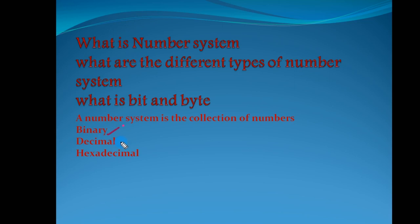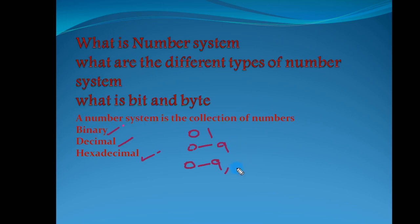There are different types of number systems. First, binary uses digits zero and one. Second, decimal uses digits zero to nine. Third, hexadecimal uses zero to nine and additionally the letters A, B, C, D, E, and F. There is also a fourth system called the octal number system.